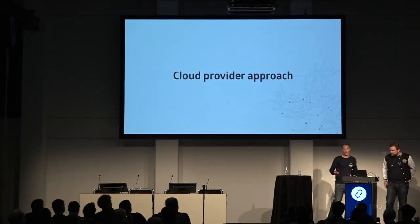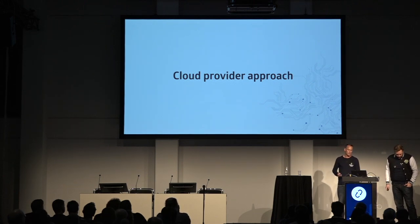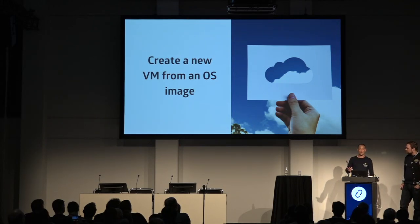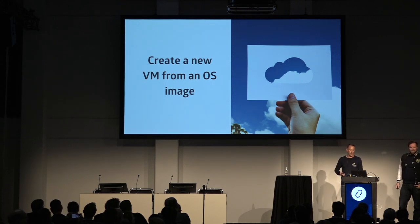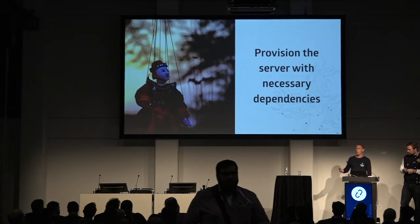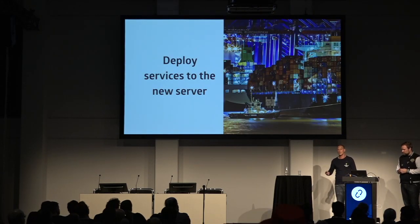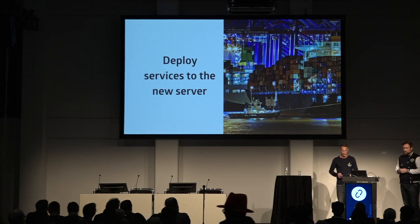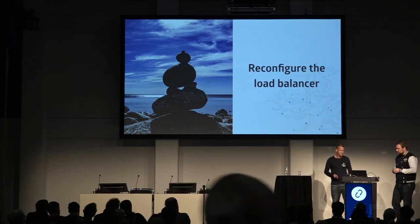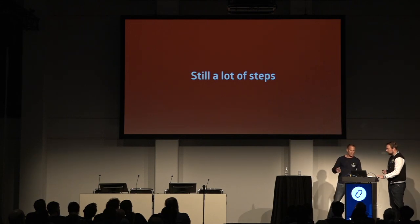Next, let's look at the cloud provider approach. What does this process look like if we're using one of the public clouds? We could start off with creating a VM from an OS image, something that's pre-configured by your cloud provider and already there. Then we would also need to provision the server with the necessary dependencies to run the application — same step again — and deploy services to the new server, including reconfiguring the load balancer. We've still got a lot of steps to perform before we can actually get to our end result.